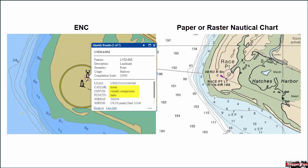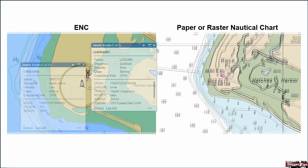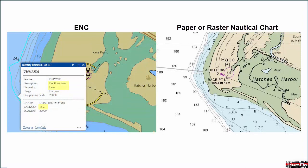Finally, we can move our cursor over one of the depth curves off the beach. Notice how the depth curve, which is linked to the pop-up dialog box, changes to a bright blue color. We can see that the depth along this curve is a value of 18.2 meters, or about 60 feet.